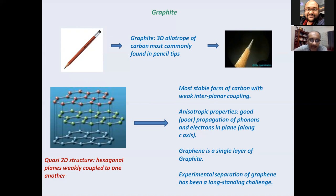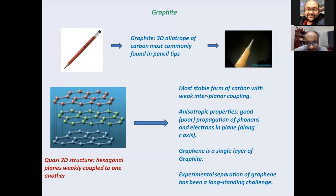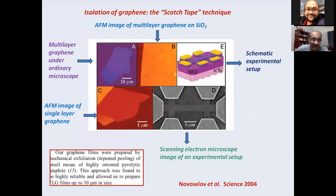Graphene happens to be a single layer of graphite. If one could separate one of these hexagonal planes and make a two-dimensional structure out of them, that would be graphene. Experimental separation of graphene had been a long-standing challenge — people could cleave graphite down to a few hundred layers, but getting a single plane was very difficult.